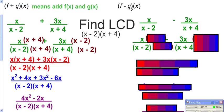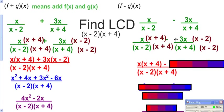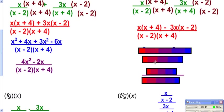For f minus g of x, all you have to do is subtract your two functions — take f of x minus g of x. Once again you need a common denominator; it's the same one. Multiply the first fraction top and bottom by x plus 4, and the second fraction top and bottom by x minus 2, giving you your common denominator. On top you'll have x times x plus 4, then a minus sign, then 3x times x minus 2. Then simplify the top while the bottom stays the same.